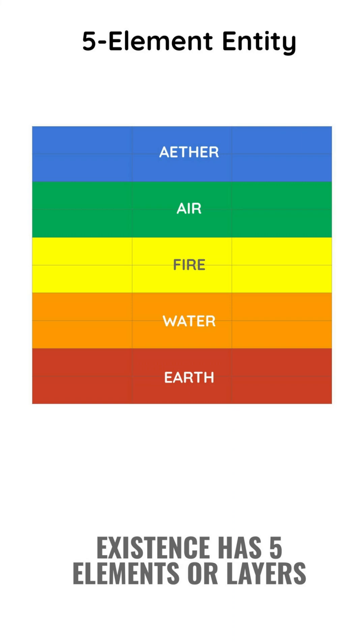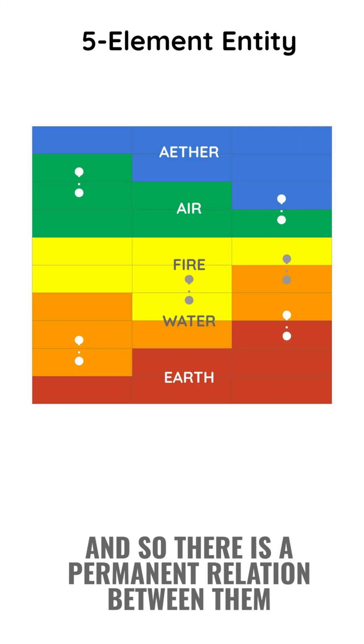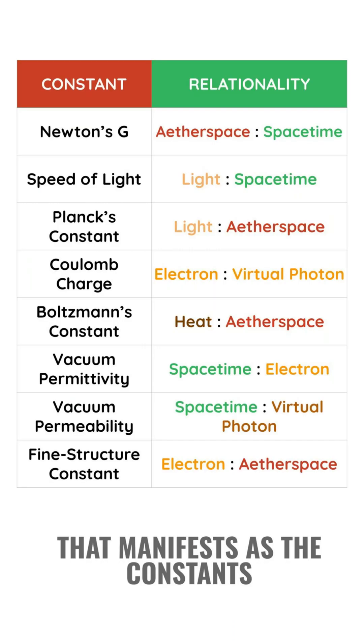Existence has five elements or layers, and so there is a permanent relation between them that manifests as physical constants.